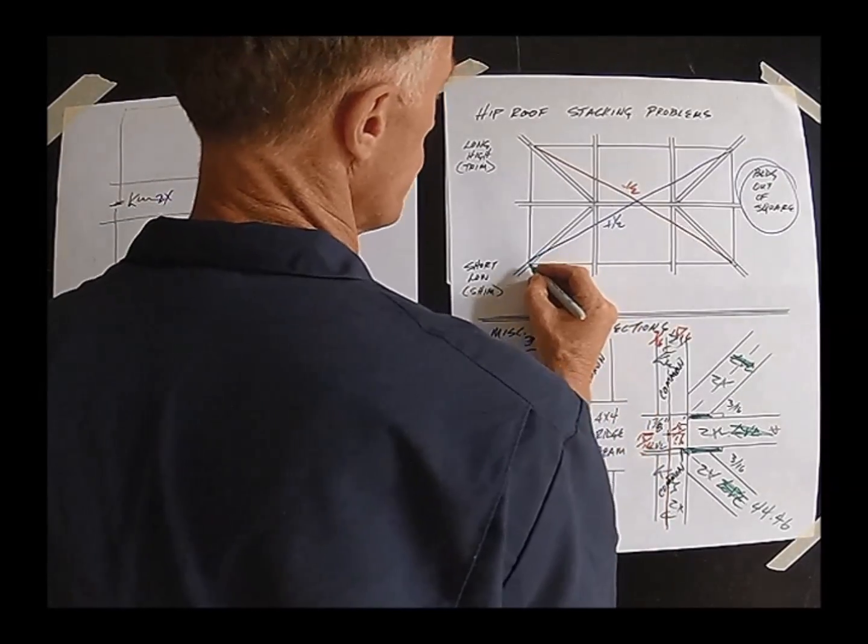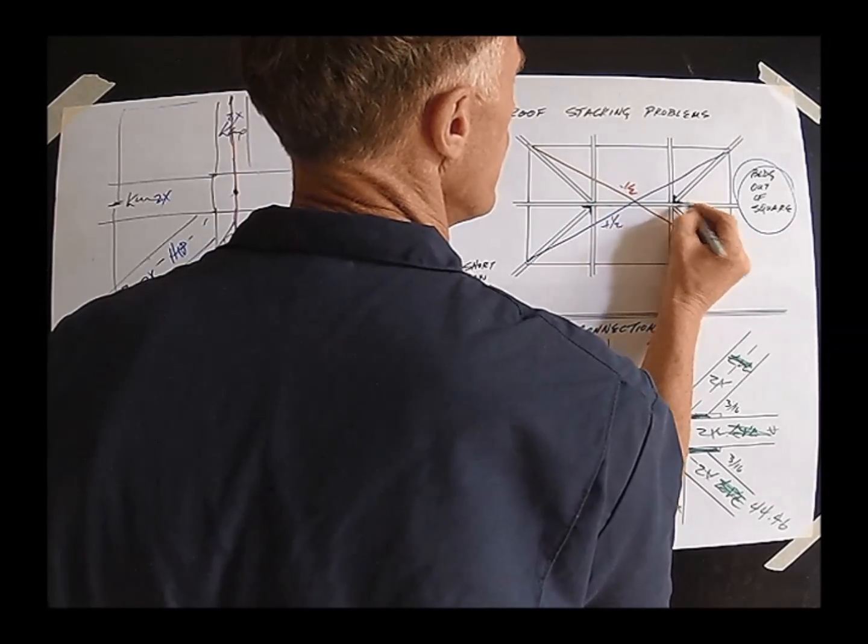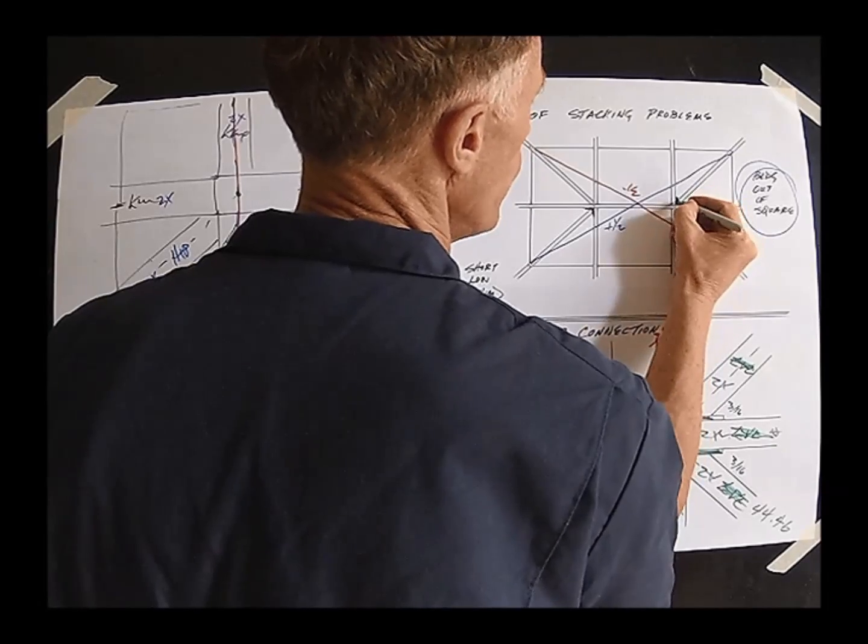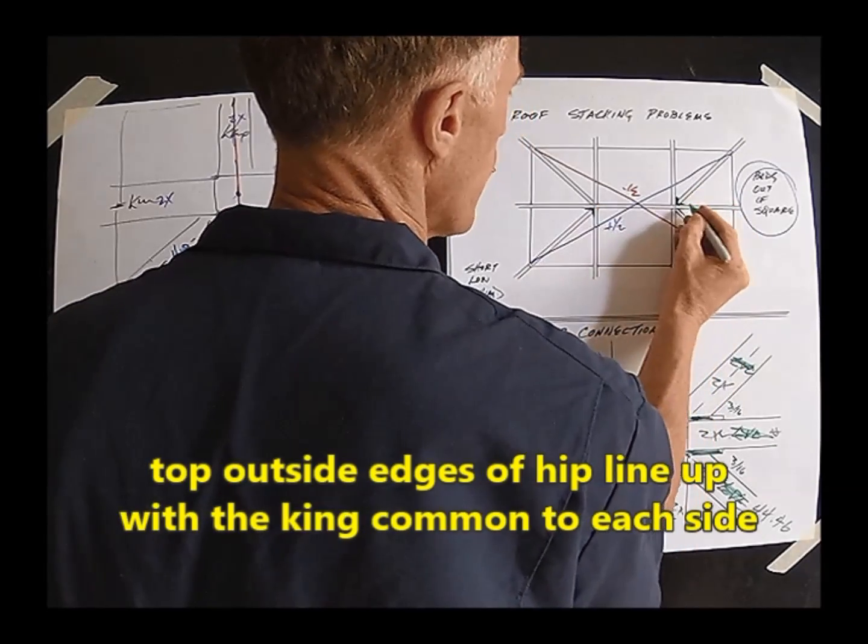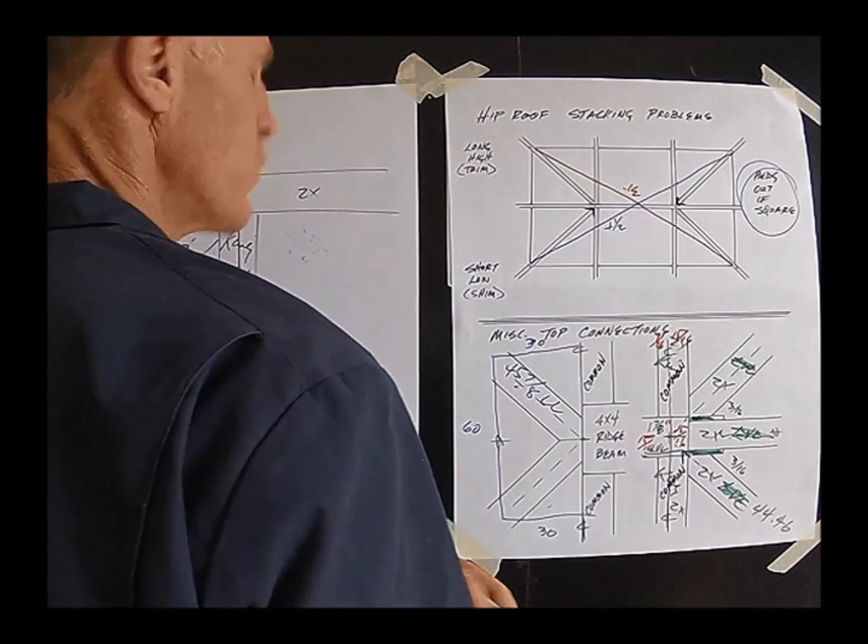These ones you're going to have to end up shimming until this outside edge lines up with your king common there and your king common there. So it'll be equal shim on both sides so it'll be obvious what you need up there.